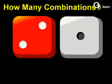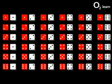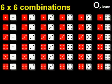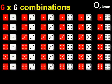How many combinations are there in total with two dice? In total, there are 36 different combinations. Six numbers for red, six different numbers for white. Six times six is 36 combinations.